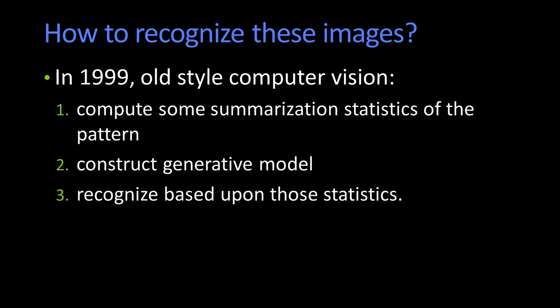So basically, in 1999, we did some sort of old-style computer vision. We're going to compute some summarization statistic of that blob. We're going to compute some features of that blob that have something to do with the distribution of where the pixels are and their intensities in the MHI.